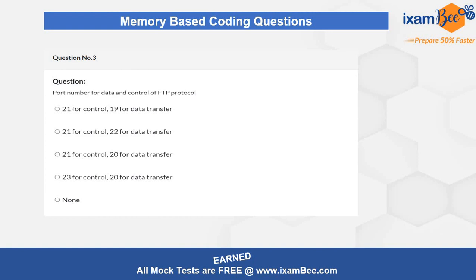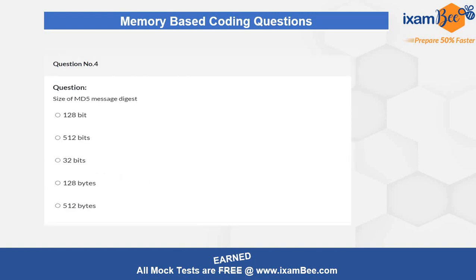Question three is again a factual, static question — if you don't know the FTP port numbers, you will not get the answer, as it does not involve any logical understanding. Question four is related to the size of the MD5 message digest. MD5 is used to encrypt messages and passwords and operates at the presentation layer of the OSI model. This is also a static question — many questions here are static, and if you don't know the facts, you may not be able to answer them.